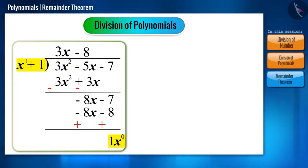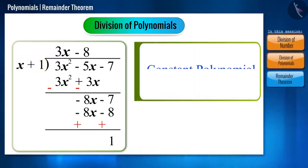This means, if the divisor is a linear polynomial, then the remainder should be a constant polynomial or any number or 0.